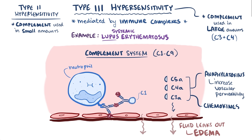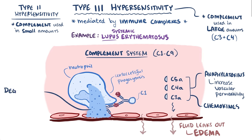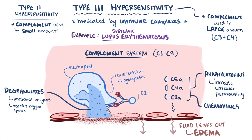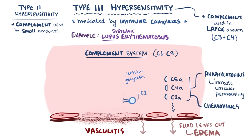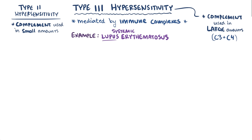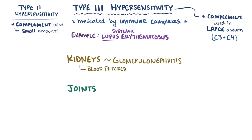Once neutrophils join the party, they try to phagocytize the immune complex, but usually they can't. During this process they degranulate, meaning they dump a bunch of lysosomal enzymes and reactive oxygen species which cause inflammation and tissue necrosis, which ultimately causes vasculitis or inflammation of the blood vessels. With inflammation comes further cellular destruction and more autoantigen release, repeating the cycle again. This most commonly takes place in areas like the kidney where the blood is being filtered, causing glomerulonephritis, as well as the joints, since blood plasma is being filtered to produce synovial fluid, and this causes inflammation of the joints or arthritis.